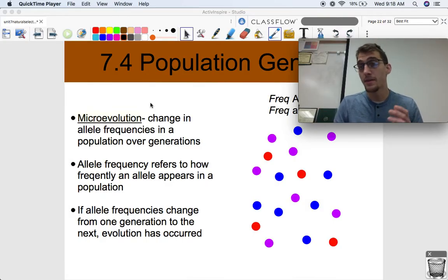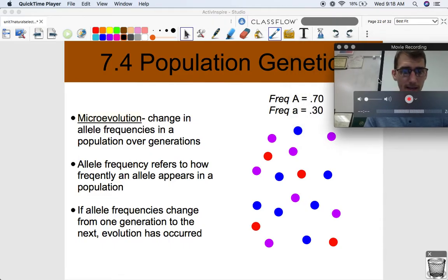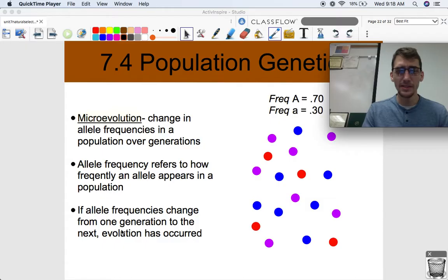On the larger scale, we're talking about the 4.5 billion year history and something called speciation, the formation of new species. But really what we're getting down to here, the basis of evolution, is microevolution - a change in allele frequencies in a population over generations. This is the smallest scale at which evolution can occur. Allele frequency refers to how frequently an allele appears in a population. If allele frequencies change from one generation to the next, evolution has occurred.